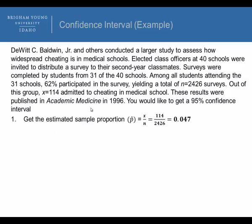First the point estimate is just basically the sample proportion, or p hat, which is x divided by n, the number of those who admitted to cheating divided by the sample size. And that would be 0.047 is our sample proportion.